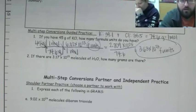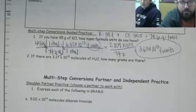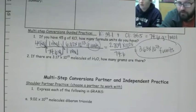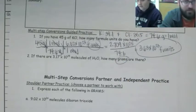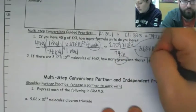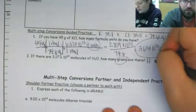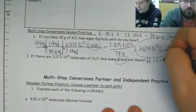So if there are 3.17 times 10 to the 23 molecules of H2O, how many grams are there? Wow. When I see grams, I want to calculate my molar mass. Uh-huh. So we're going to start right there with figuring out our molar mass of H2O. H is 1 and there's 2 of them. So that's 2.